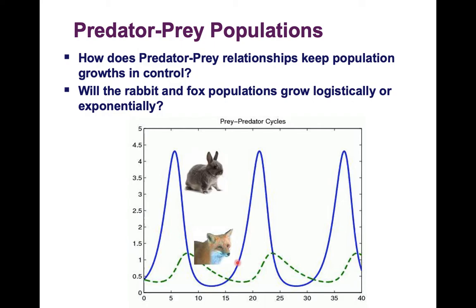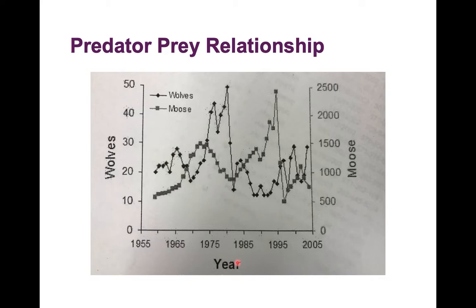Here is another example of a predator-prey relationship: wolves and the moose population. As you explore this graph, you see the same pattern. The moose population starts to go up, and because there's a lot of moose — food for the wolves — the wolf population also goes up. But too many wolves prey on the moose, so the moose population decreases. With very little food left, the wolf population drops too, and the cycle repeats itself throughout the years.